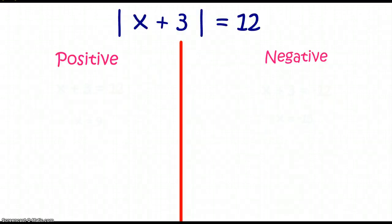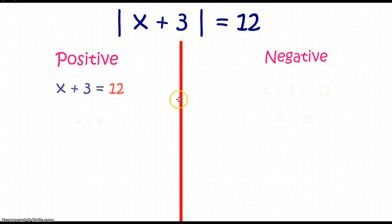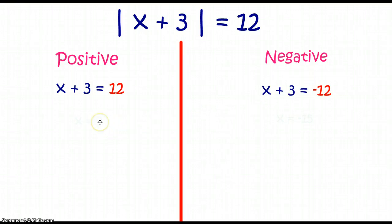Let's try another one. This time the absolute value of X plus 3 is equal to 12. There are two numbers whose absolute value is 12: 12 and negative 12. So we set what's inside the absolute value symbol equal to positive 12, and also equal to negative 12, then solve each equation. When we subtract 3 we get 9, and when we subtract 3 from the negative side we get negative 15.